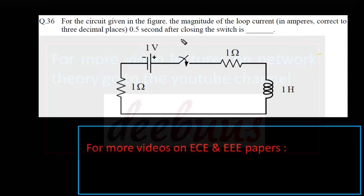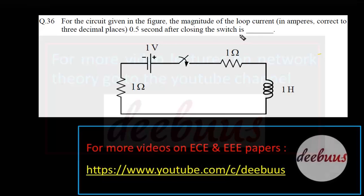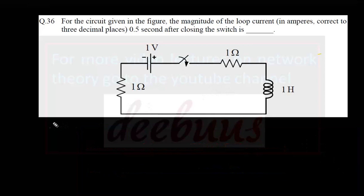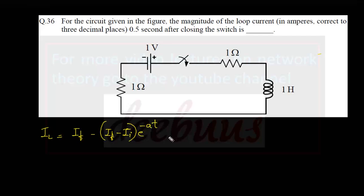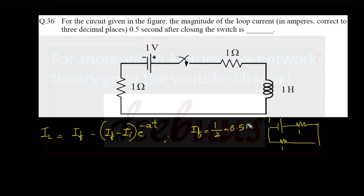Moving to the next question: for the circuit given in the figure, we need the magnitude of the loop current correct to 3 decimals at 0.5 seconds after closing the switch. This is a DC characterization of an RL circuit. The basic charging expression is IL = I_final minus (I_final minus I_initial) × e^(−At). At t=0, the switch closes: 1 volt in series with 1 ohm, a short-circuited inductor, and another 1 ohm, giving I_final = 1/(1+1) = 0.5 ampere.